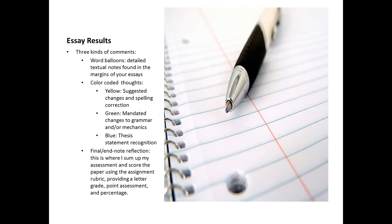Speaking of those highlighted materials, I tend to use three distinct different types of color-coded thoughts or commentary points. Yellow highlighted points are suggested changes and spelling corrections. Green comments are the most important — these are mandated changes, specifically in reflection to grammar and/or mechanics concerns that may be present in your essay drafts. Lastly, you'll find some blue highlighted thoughts, which is simply a recognition of the presence of an effective thesis statement and nothing more.